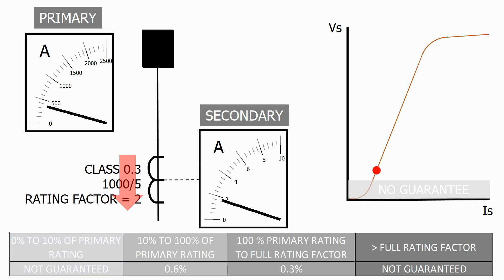If we increase the current further we move on to the linear part of the curve. From 10% to 100% of the primary rating or from 100 amps to 1000 amps we can guarantee the CT error will be less than plus or minus 0.6% of the value it should be as per the CT ratio.